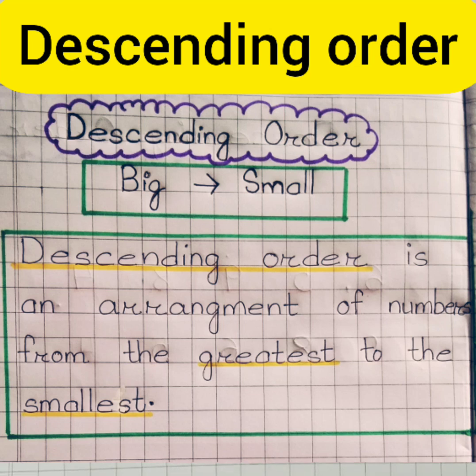Hello kids, in this video let's learn about descending order. What do you mean by descending order? Descending order is an arrangement of numbers from the greatest to the smallest.